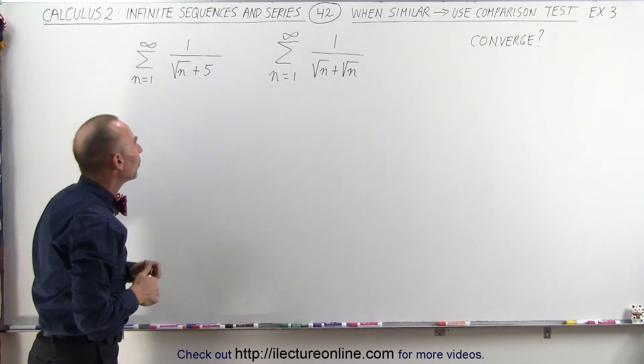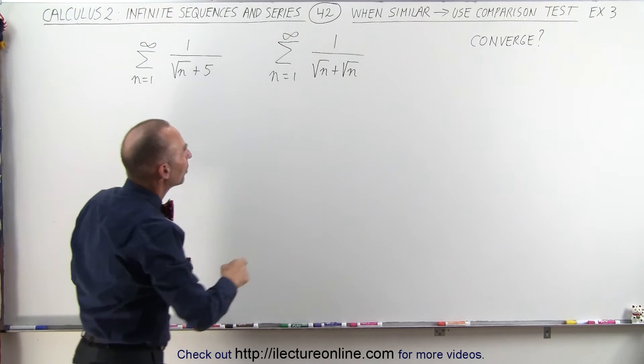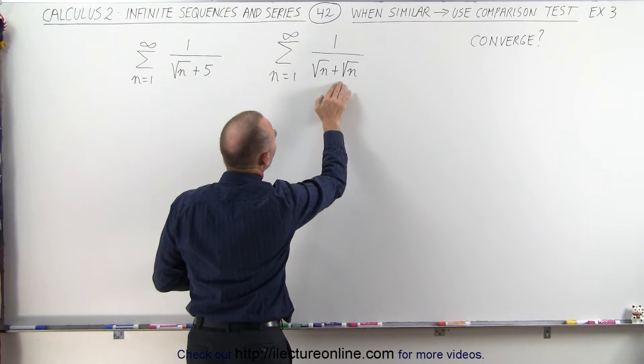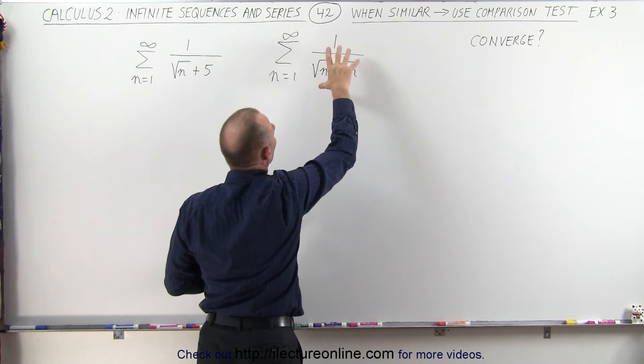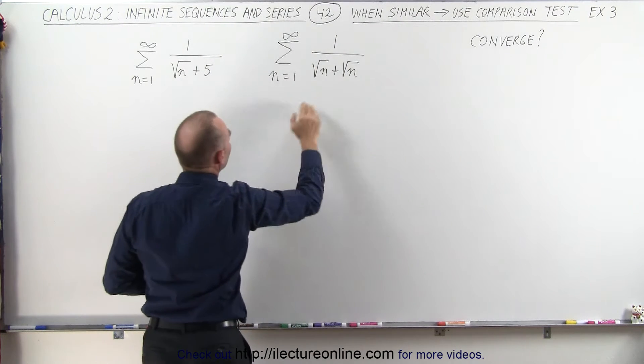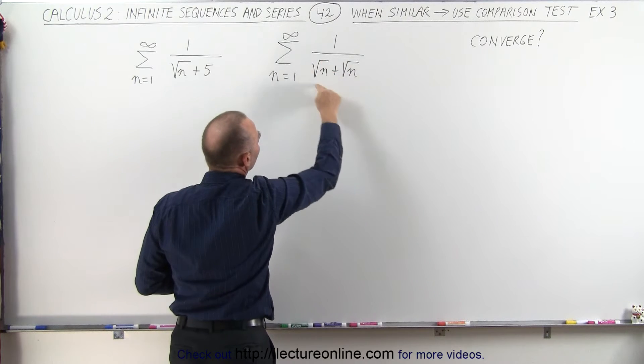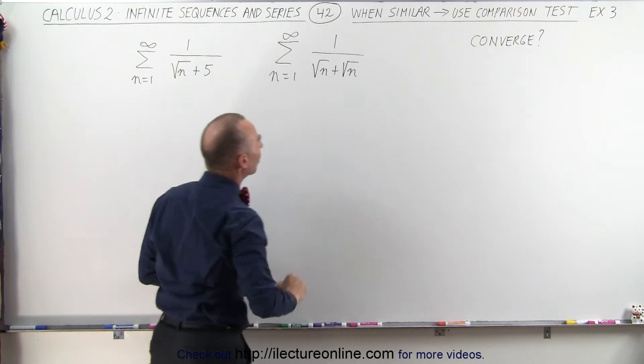Now what does that mean? Well when n is a small number, the denominator will be smaller and the fraction will be larger. But as n becomes large, the denominator here will become larger and the fraction will become smaller.